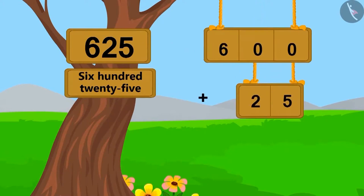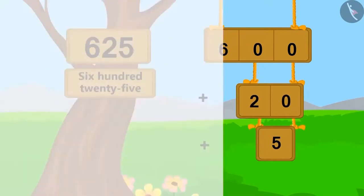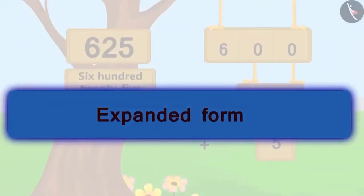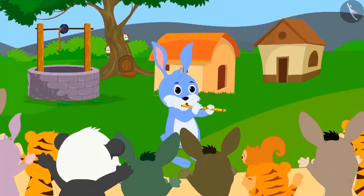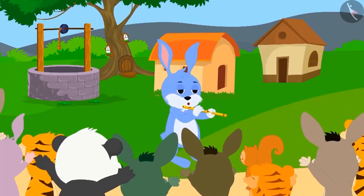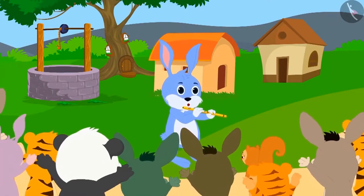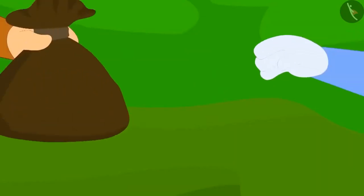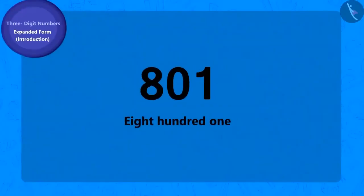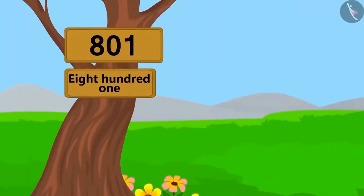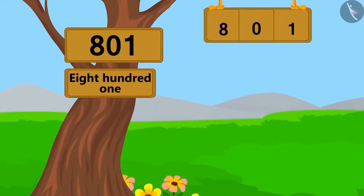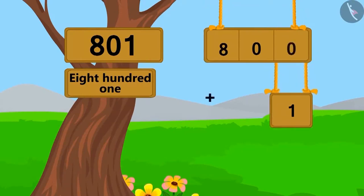This method is known as writing in expanded form. Bunny became very popular and went village to village playing his flute. From the next village he got 801 coins as a reward. Can you write this number in expanded form? 801 is 1 ahead of 800, so we can write it in expanded form as: add 800 and 1.